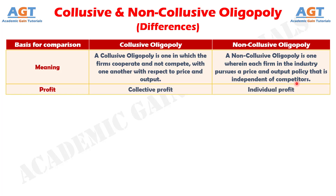Difference No. 2: In a collusive oligopoly, firms act as a single monopoly and intend to increase their collective profit instead of individual profit. Whereas, in a non-collusive oligopoly, the firms intend to increase their own profit and determine the volume of output to be produced, in an assumption that competing firms would not change the quantity supplied by them.